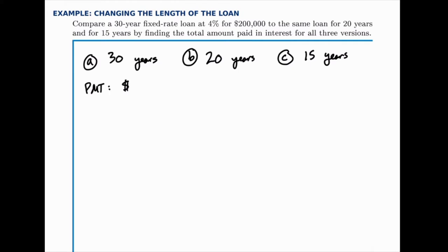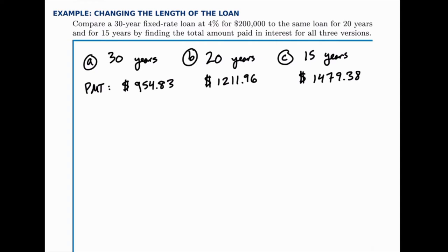For the 30-year mortgage, the payment amount is $954.83. For the 20-year mortgage, the payment is $1,211.96. And for 15 years, it's $1,479.38. Notice that the payment goes up the shorter the loan is, and that makes sense because you have to pay off the same amount of money in a shorter period of time, so you have to make higher payments.